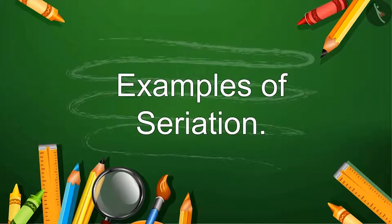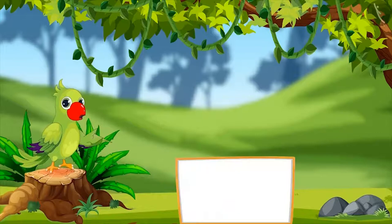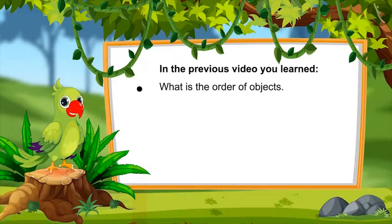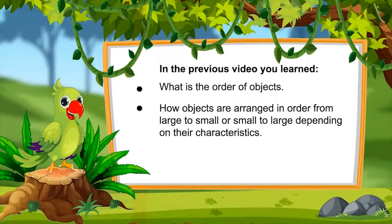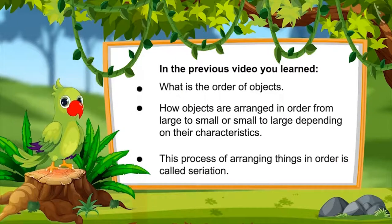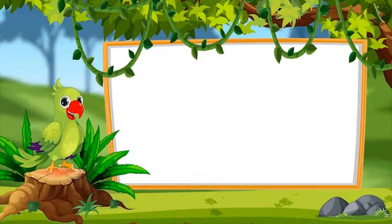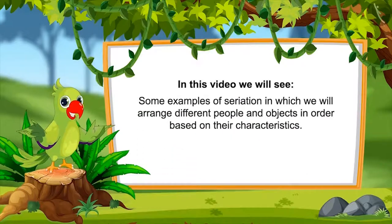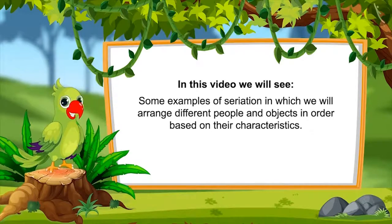These are the examples of Seriation. In the previous video you have learned what is the order of objects — how they are arranged in large to small or small to large order. This process of arranging things in order is called Seriation. In this video we will see some examples of Seriation in which we will arrange different people and objects in order based on their characteristics.